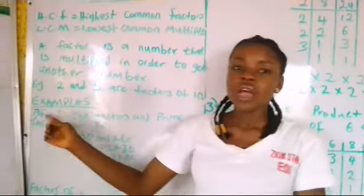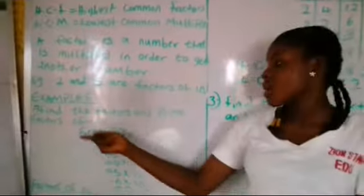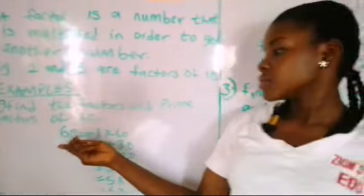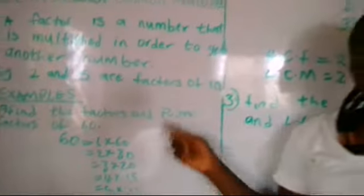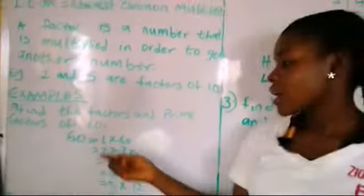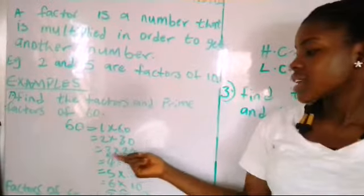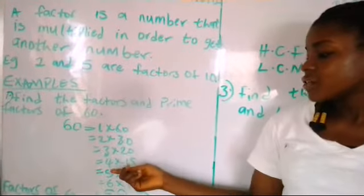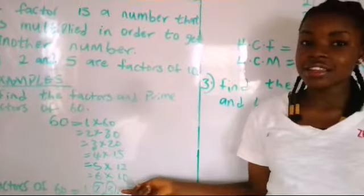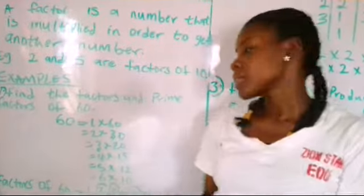Let's look at this example. Find the factors and prime factors of 60. To look for the factors, we look for numbers that when you multiply them together will give you 60. We have 1×60, 2×30, 3×20, 4×15, 5×12, and 6×10. All these numbers when you multiply them together will give you 60.